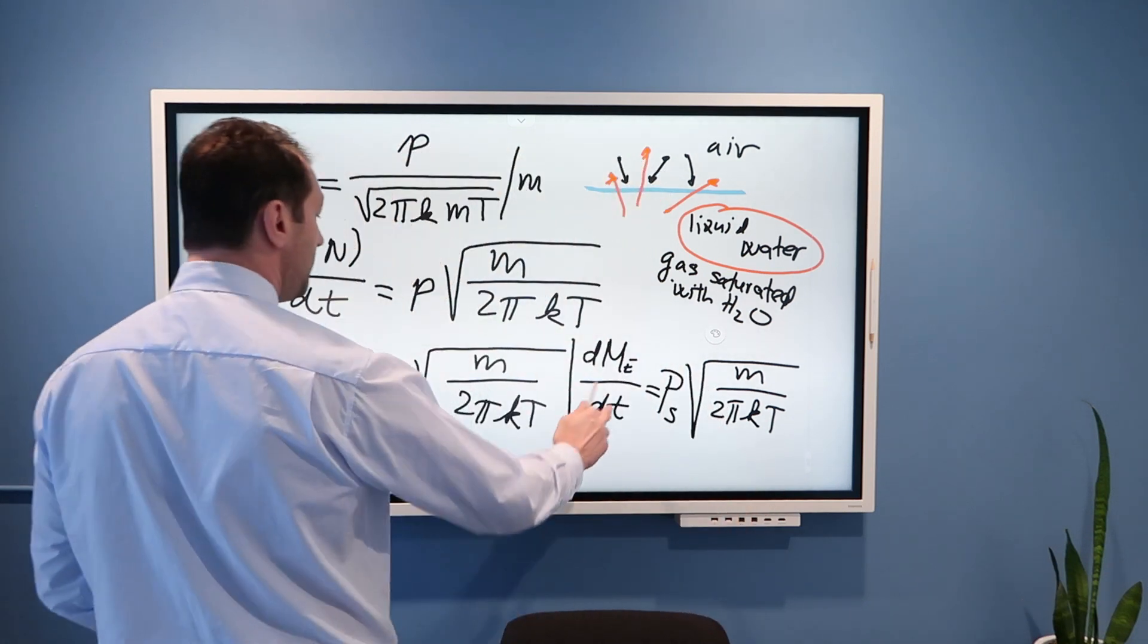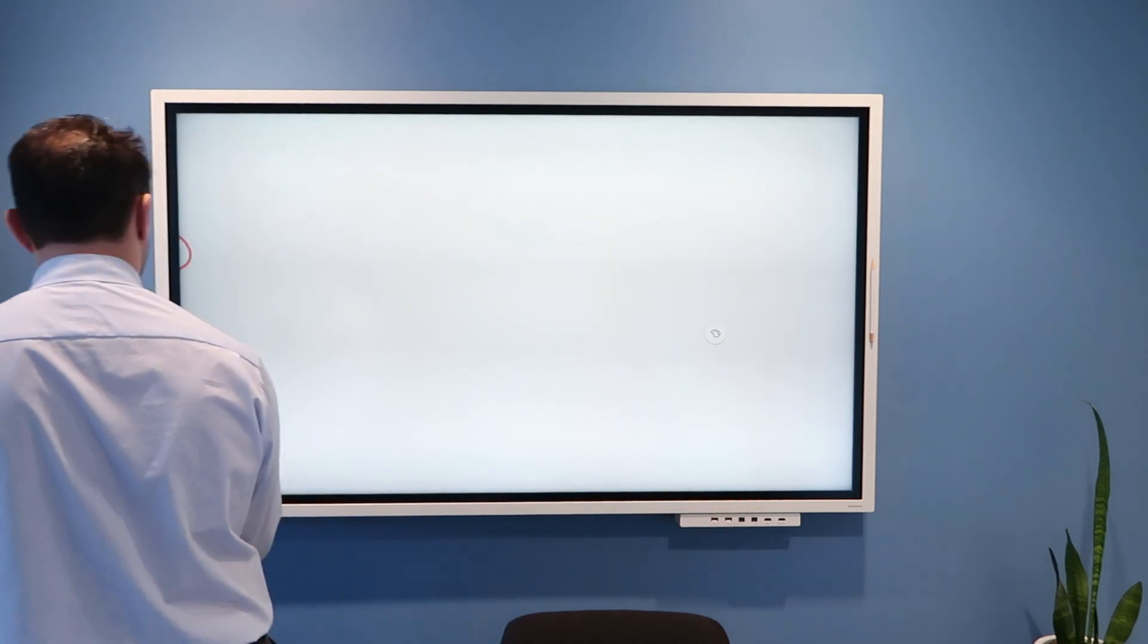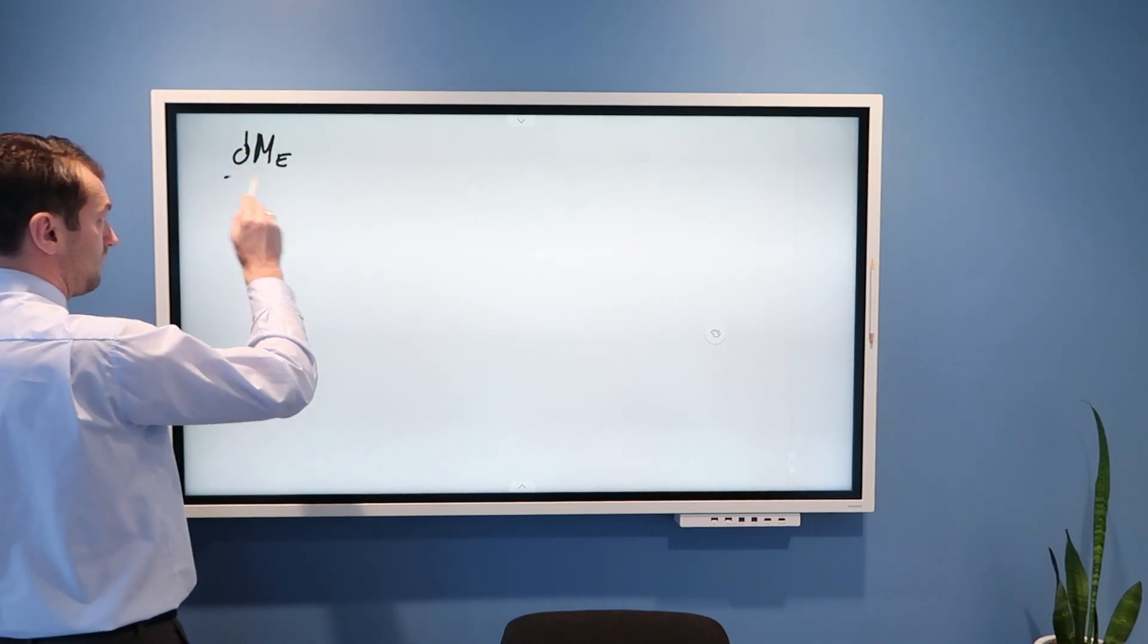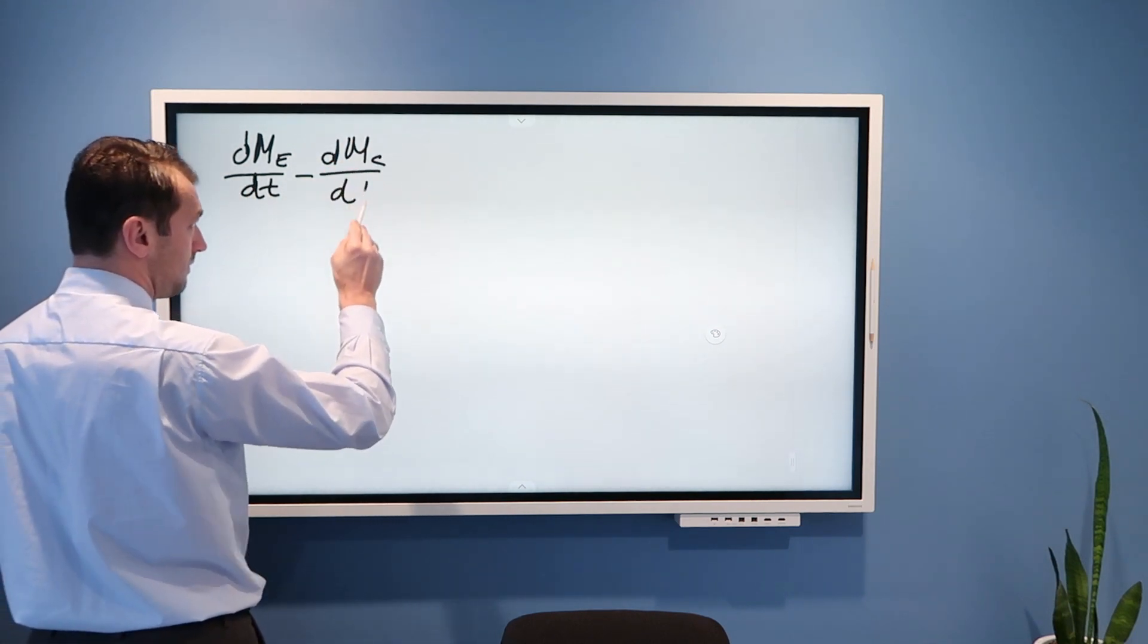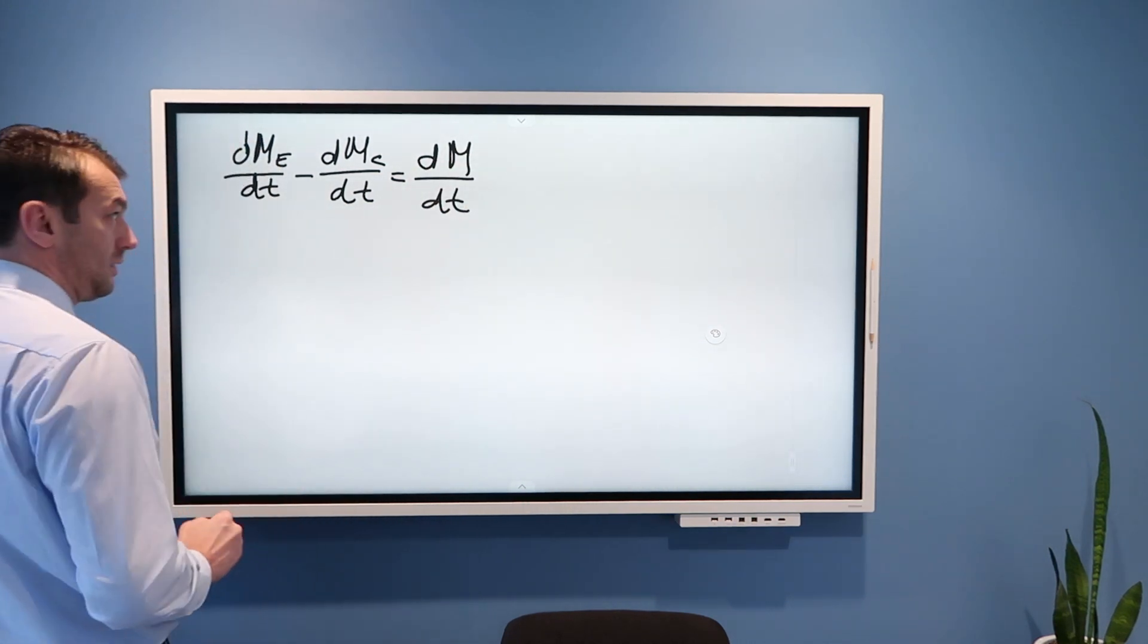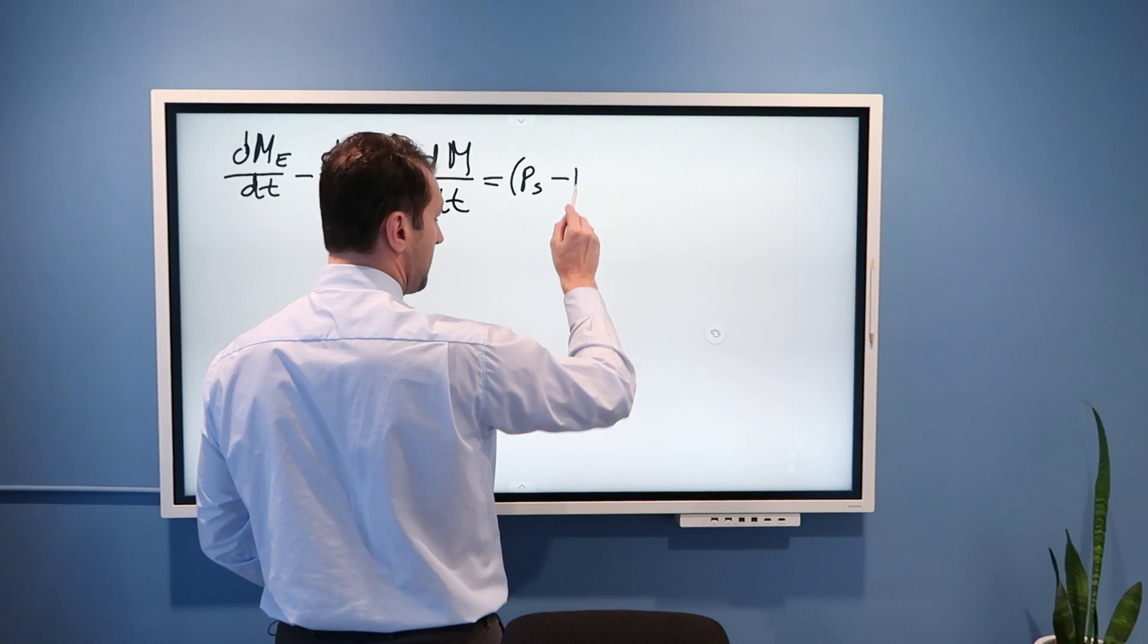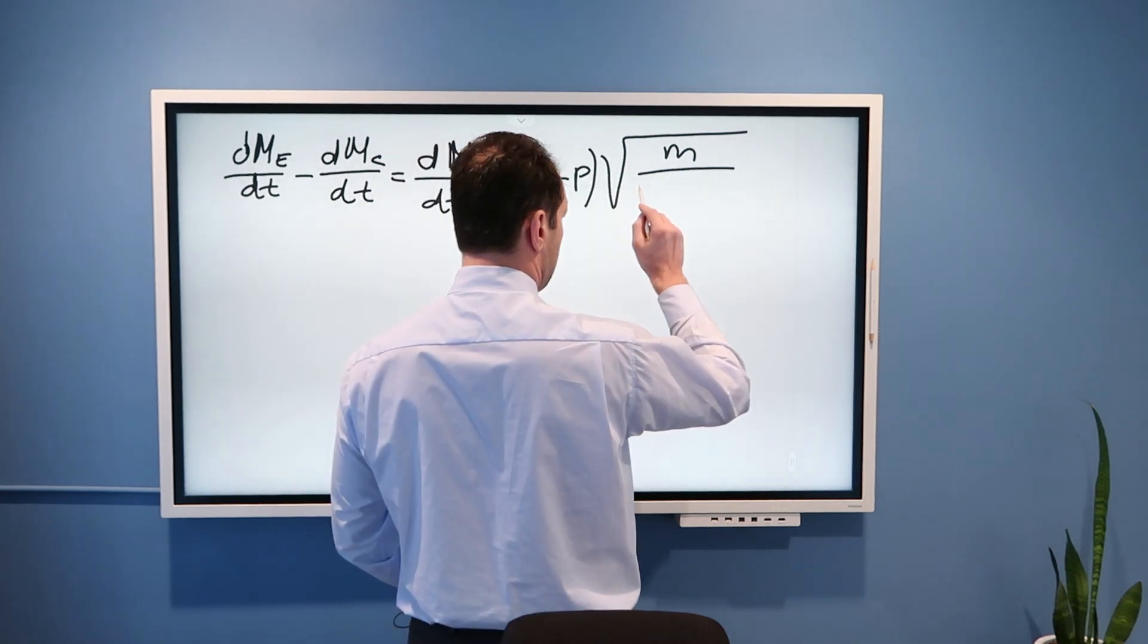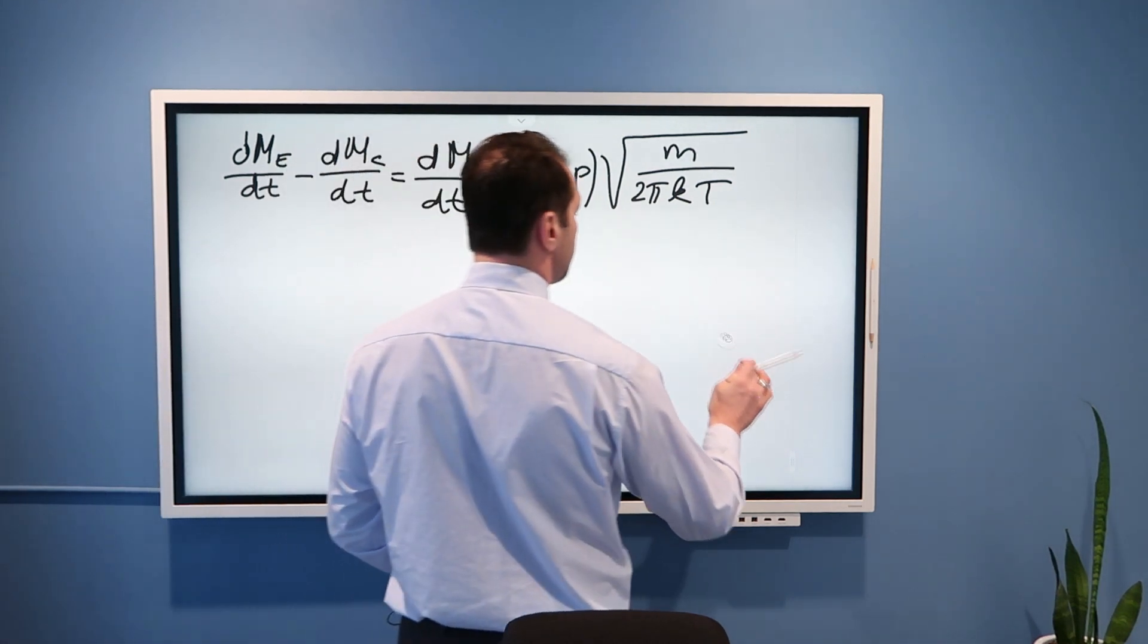Now, if we subtract these two equations, what I will get is that dmE/dt minus dmc/dt, and I will just call that dm/dt.